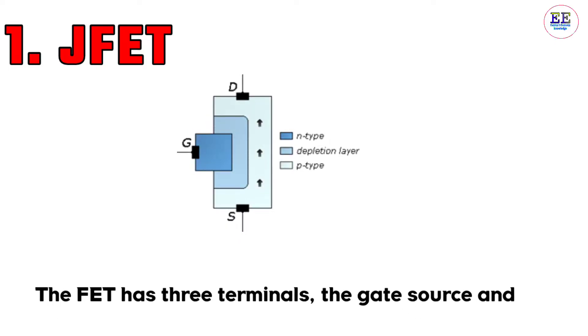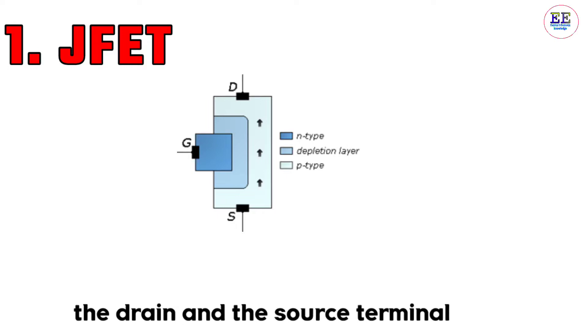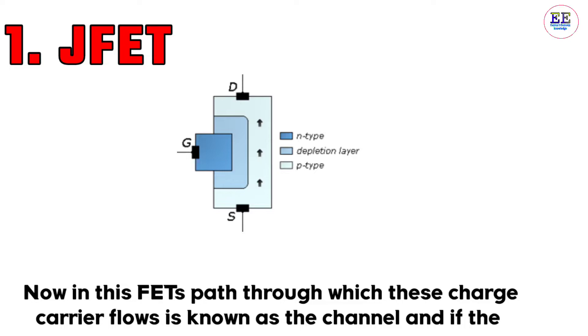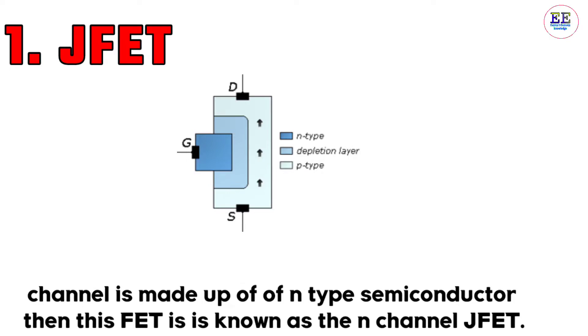The FET has three terminals: gate, source, and drain. Current flows between the drain and source terminals. In these FETs, the path through which charge carriers flow is known as the channel.